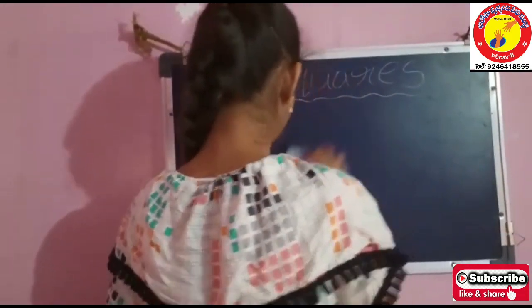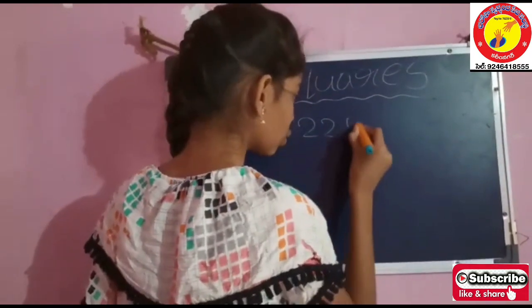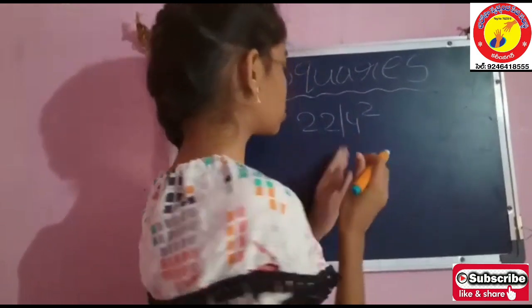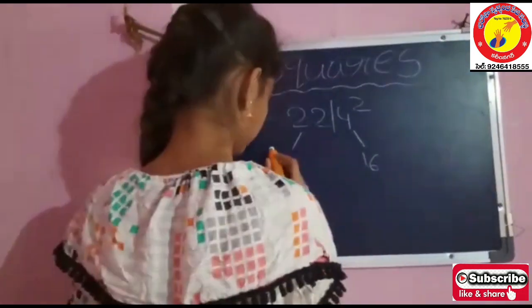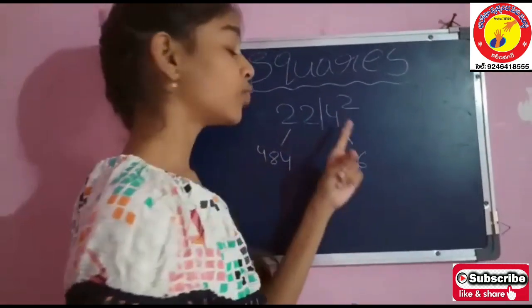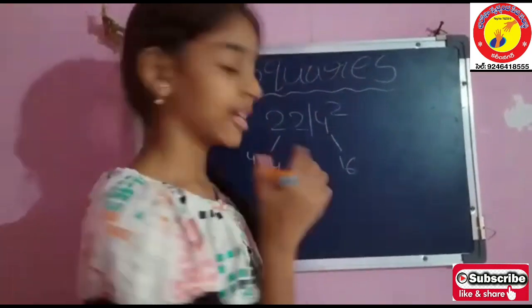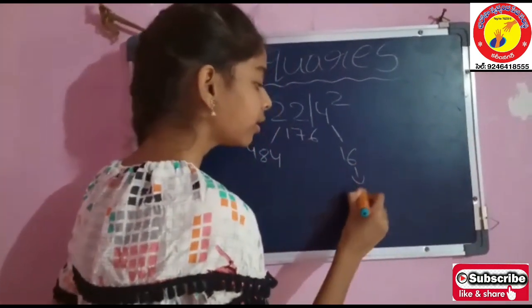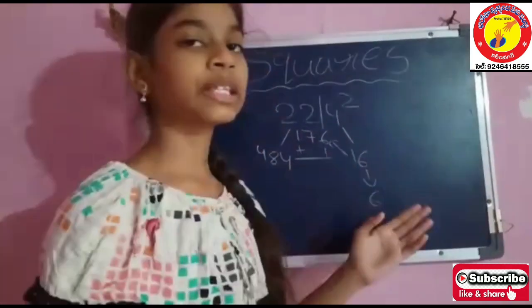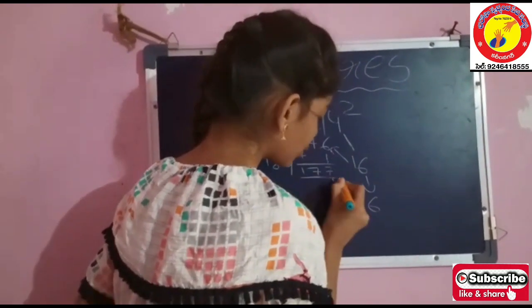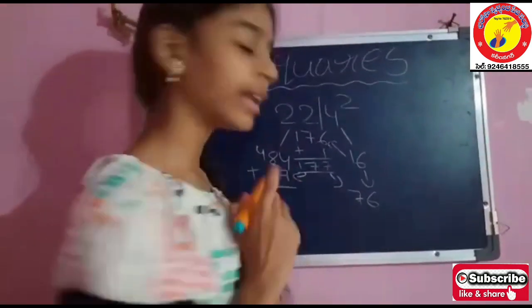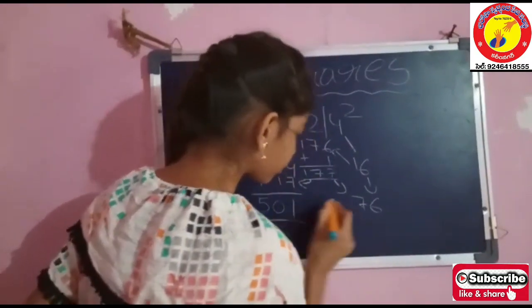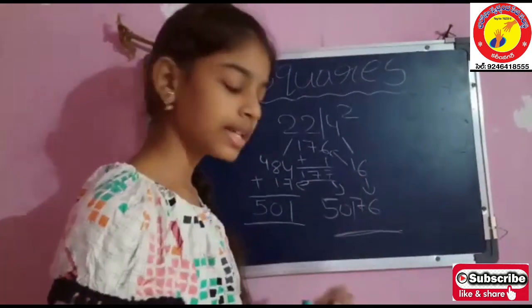So what about 3-digit numbers? Let us try. 224 squared. So we should separate. 4 x 4 is 16. 22 x 22 is 484. 22 x 4 is 88, and 88 x 2 is 176. We drop 6 here and carry 1 — 176 plus 1 is 177. We drop 7 here and carry 17. So 484 plus 17 is 501. Our answer is 50,176.